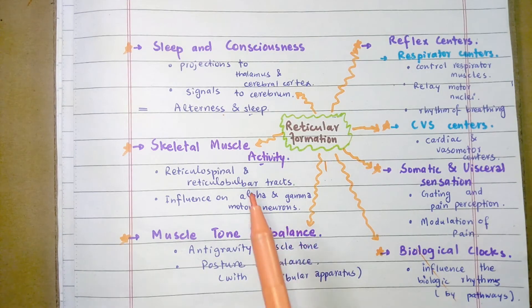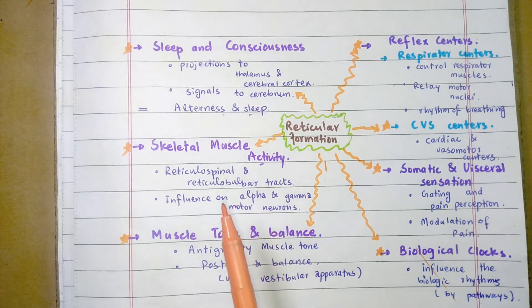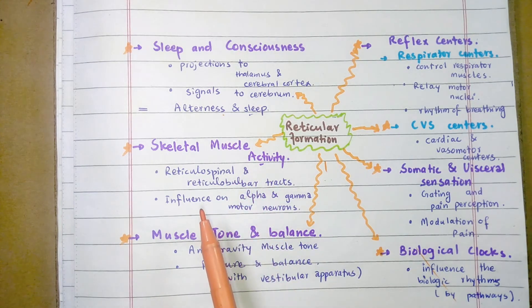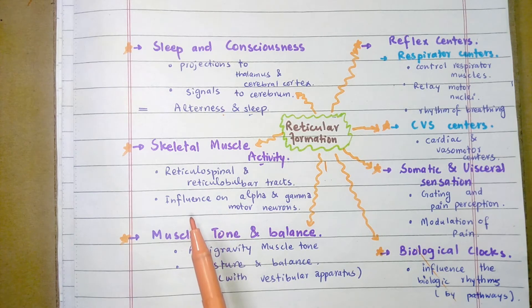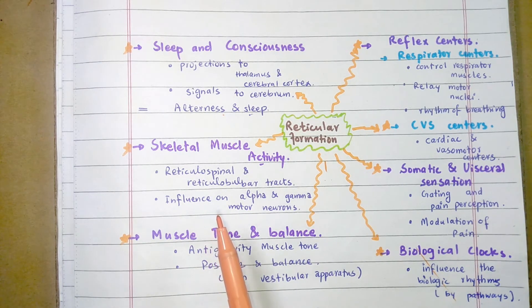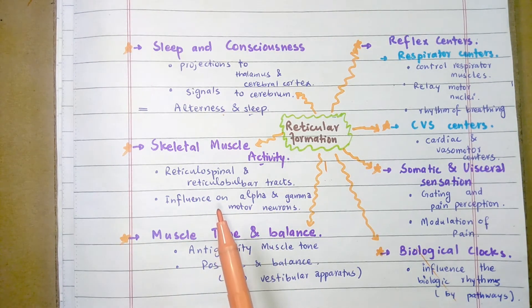Control of Skeletal Muscle Activity: Reticular formation has a role in regulating the activity of skeletal muscle. The reticulospinal tract and the reticulobulbar tract pass through the reticular formation, and it influences the activity of alpha and gamma motor neurons through these tracts. In this way, it can modulate muscle tone.